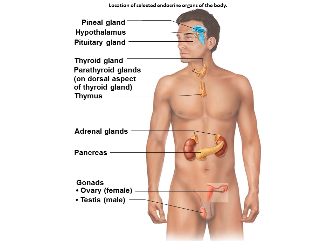In contrast, endocrine glands produce hormones directly into the blood and they lack ducts. Other tissues and organs that produce hormones include adipose cells, thymus, and cells in the walls of the small intestine, stomach, kidneys, and heart.